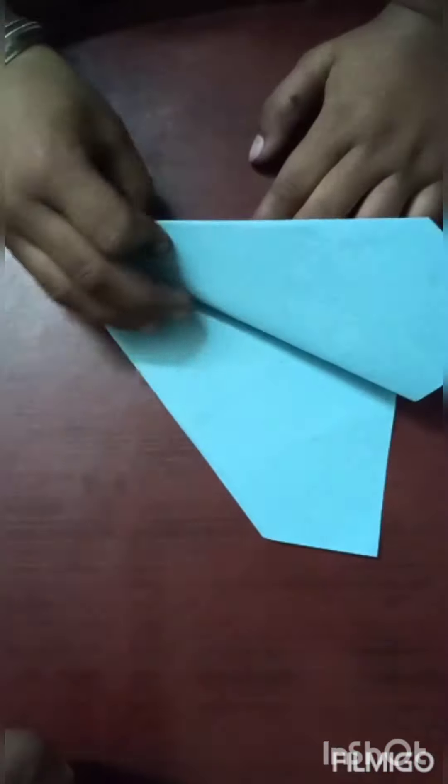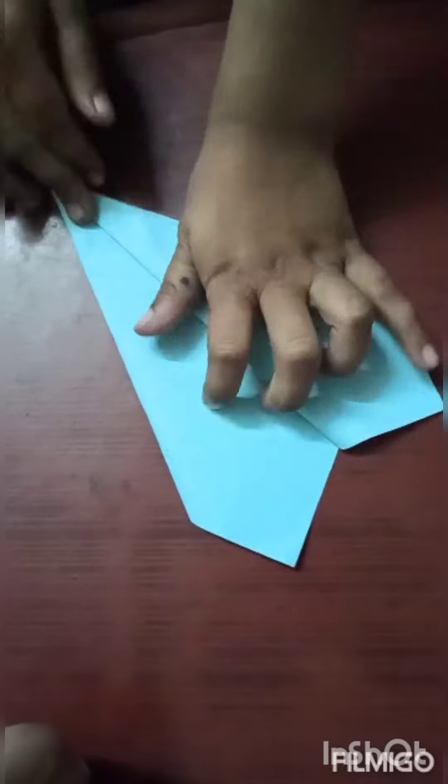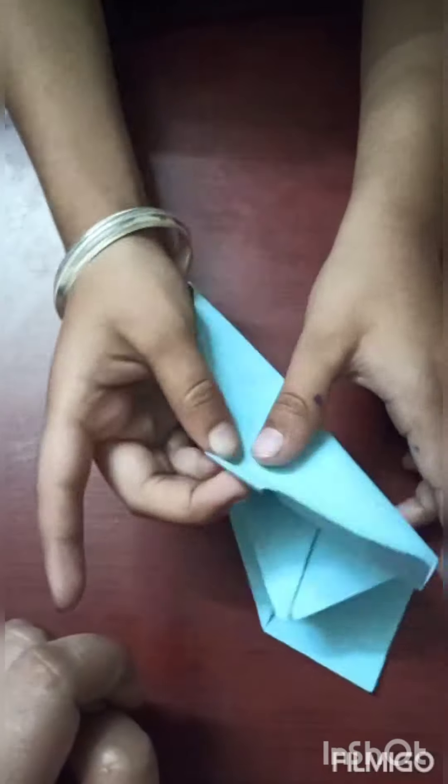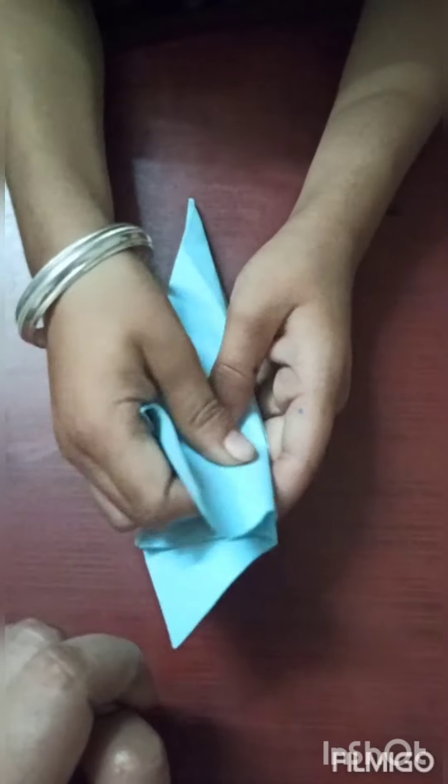Now fold it. Slice it from the center. Now fold the sides to the center so the paper plane is ready.